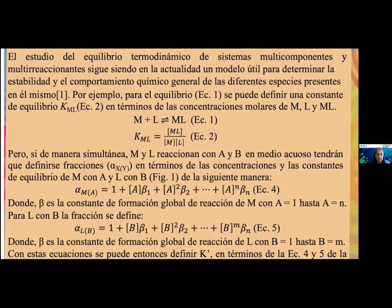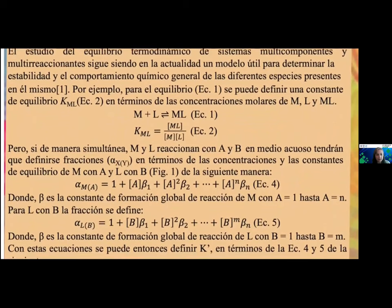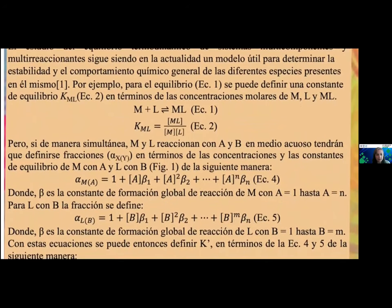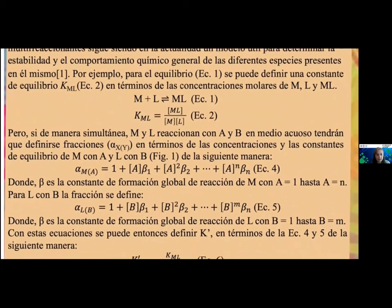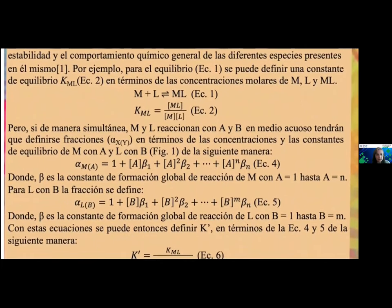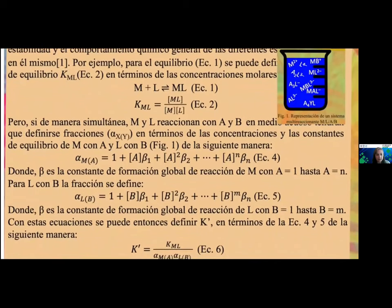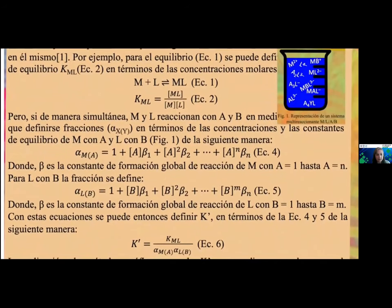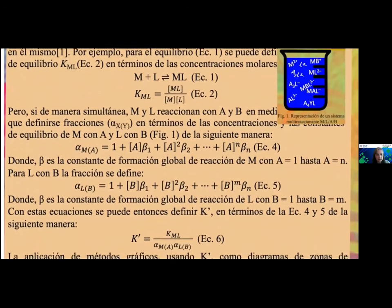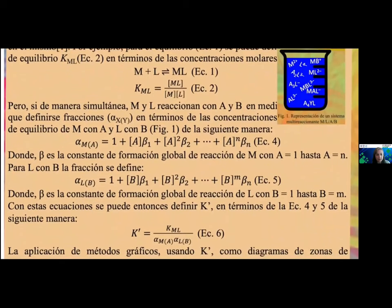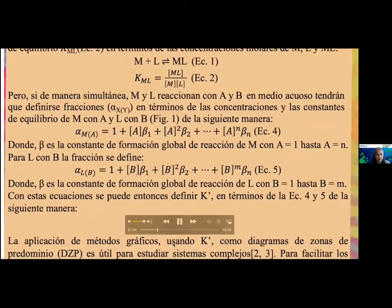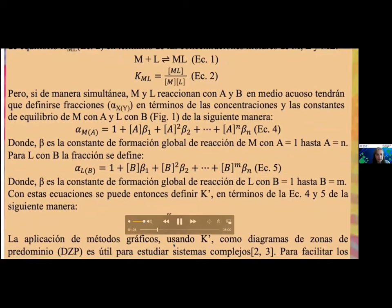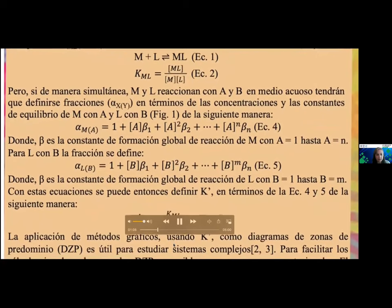Pero, si de manera simultánea, M y L reaccionan con A y B en medio acuoso, tendrá que definirse fracciones alfa en términos de las concentraciones y las constantes de equilibrio de M con A y L con B, como se muestra en la ecuación 4. Donde beta es la constante de formación global de reacción de M con A igual a 1 hasta A igual a N. Para L con B, la fracción se define como se muestra en la ecuación 5, donde beta es la constante de formación global de reacción de L con B igual a 1 hasta B igual a M.